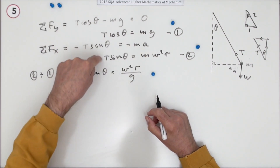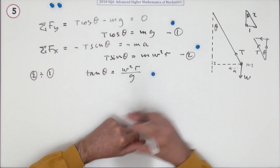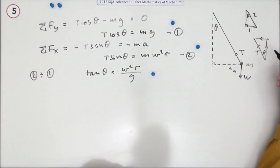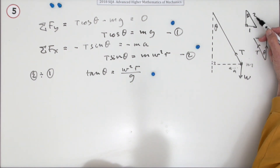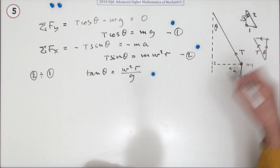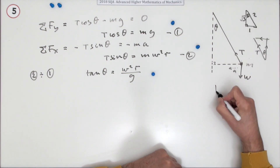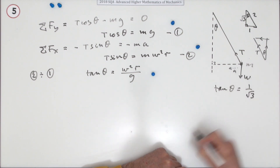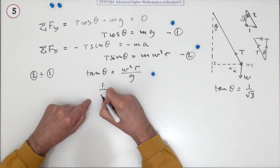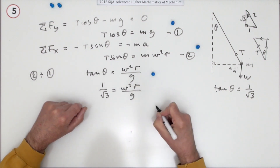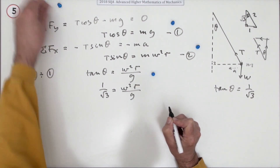Dealing with the simultaneous equations by dividing gives that mark. Now it's just a case of finding tanθ. We recognise that triangle with sides 1 and 2 — the sine is one half, so the angle is 30°. It's the 1, 2, √3 triangle, which means the tangent of theta is 1 upon √3. Substituting that in: 1/√3 = ω²r / g. That gives you a mark.